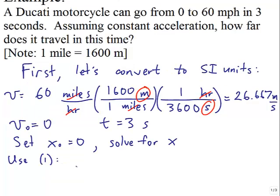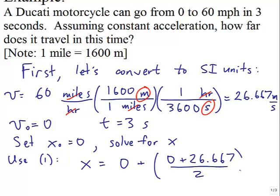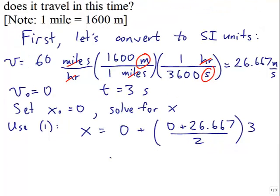Using equation 1: x equals x-initial (0) plus (v-initial (0) plus v-final (26.667)) divided by 2, times time (3 seconds). Plugging into my calculator, I get 40 meters.